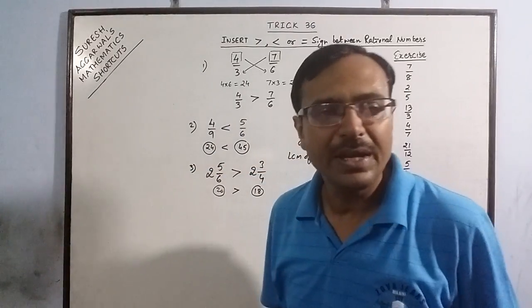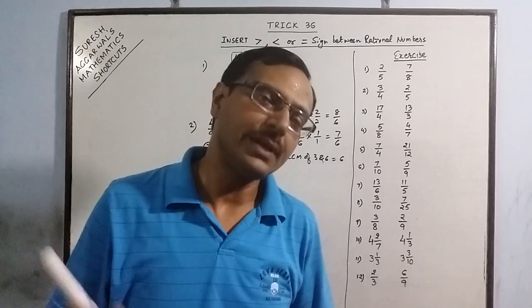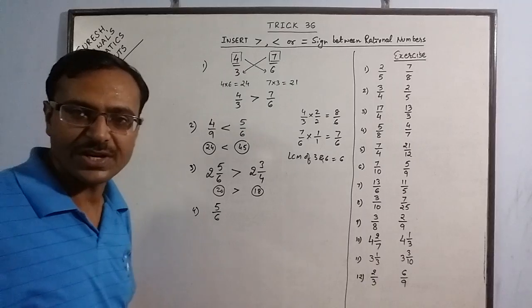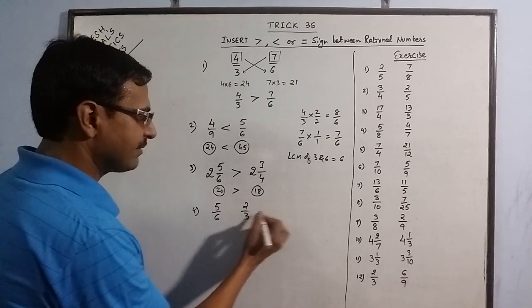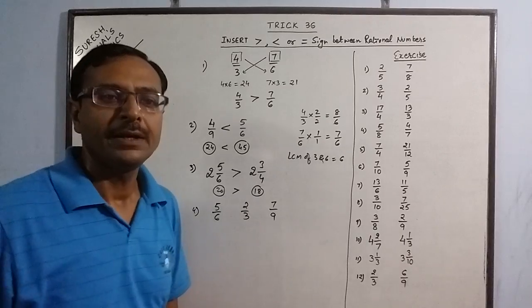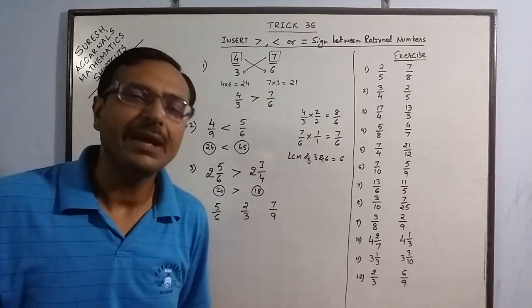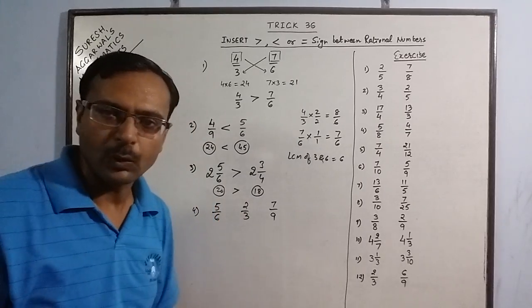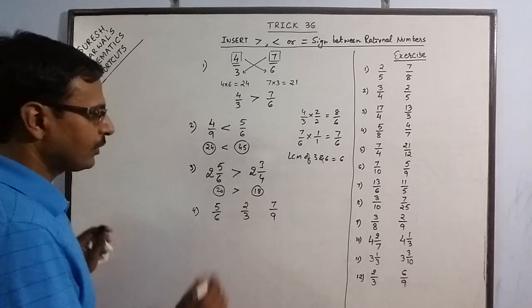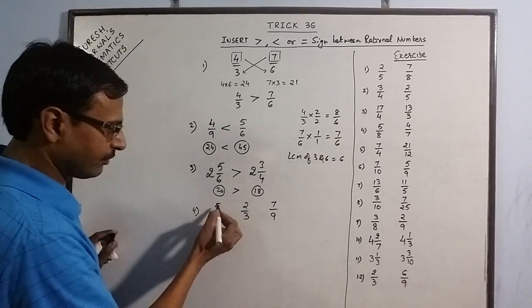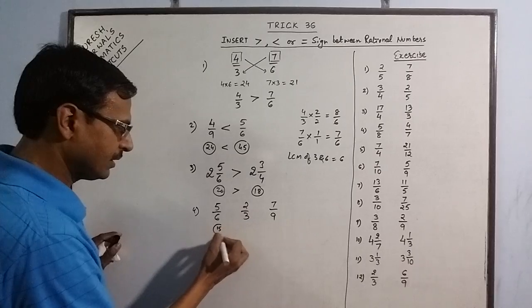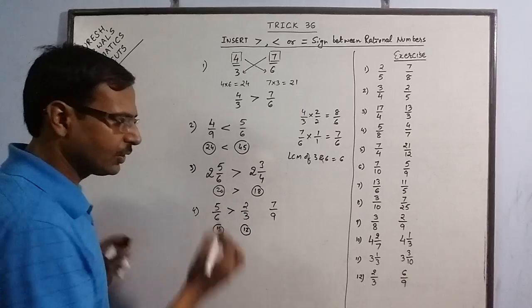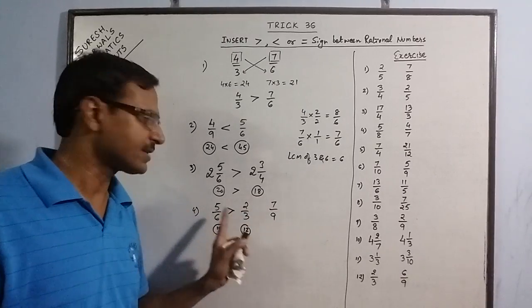Similar is the case when we have to find the greatest among 2 or 3 rational numbers. Say we have 5 by 6 as the first rational number, 2 by 3, and 7 by 9. We have to find which of them is greatest or arrange them in descending or ascending order. So now we compare the first two: 5 times 3 is 15, 6 times 2 is 12. Obviously 5 by 6 is greater than 2 by 3.